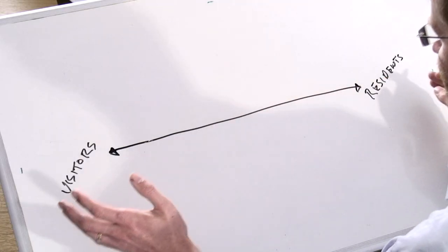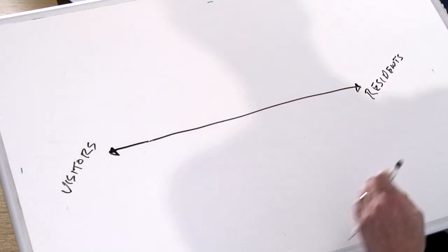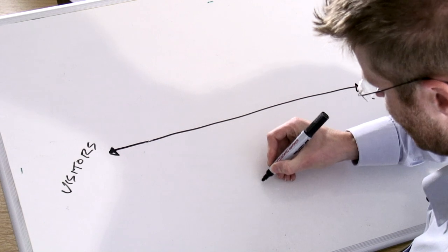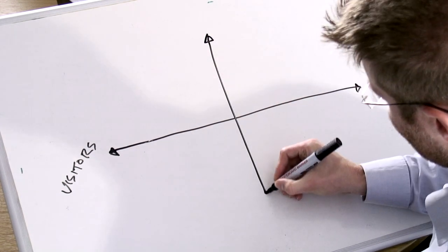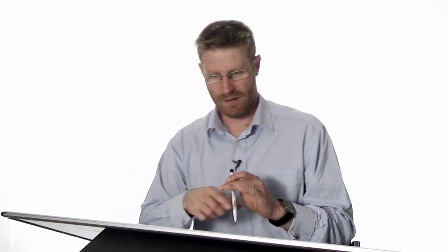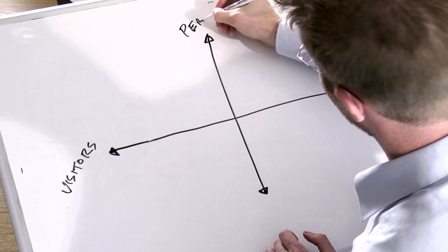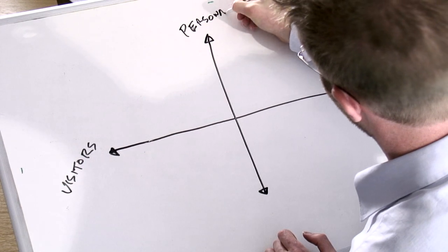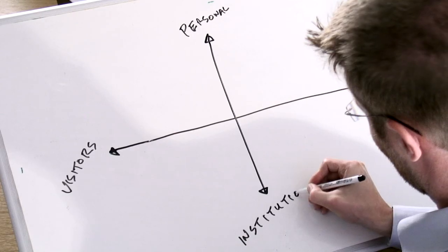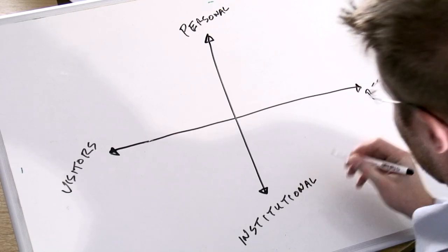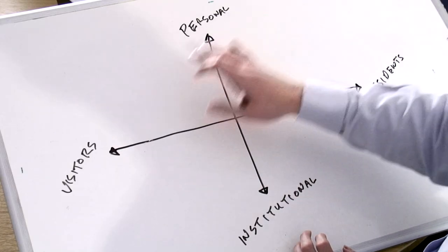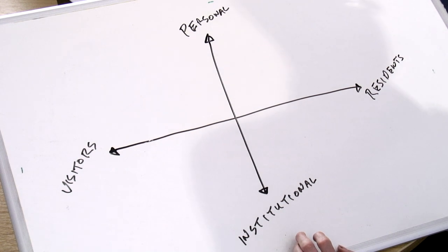So that's the continuum. Now what we can do with the continuum is we can add a vertical axis. And in this case I'm going to write personal and institutional. So that gives us a grid here that we can work with and we can plot how we engage with the web across these different quadrants.